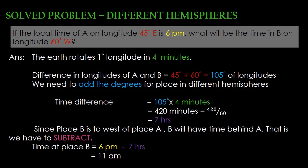The next step is to find the time difference. For 1 degree longitude the earth takes 4 minutes, so for 105 degrees we need to multiply 105 with 4, that is 420 minutes. Now we need to convert the minutes into hours: 420 divided by 60 is 7 hours.